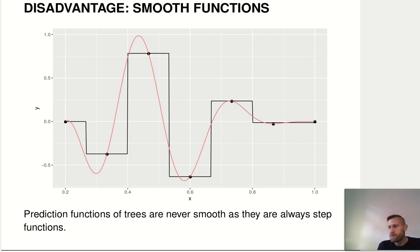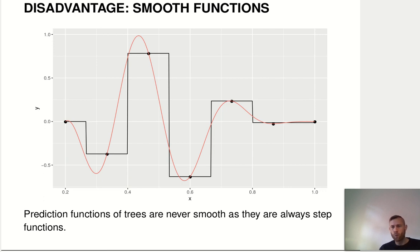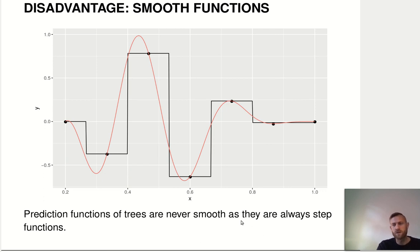Another disadvantage is that we are getting a step function, so if the true underlying function is something smooth, you will need a lot of steps — a very complicated tree — to approximate it well with a step function. For example, the red curve represents the true function and black is our tree model. Most of the time it doesn't approximate the function very well; you need a lot more steps in your step function to really capture the shape of that function.